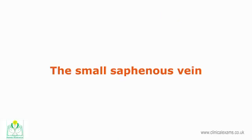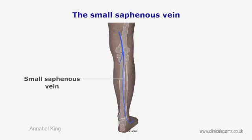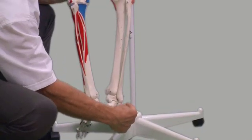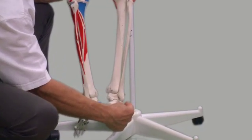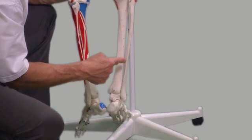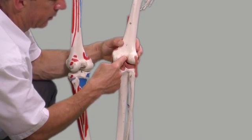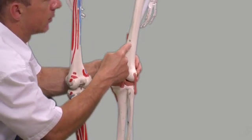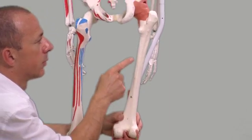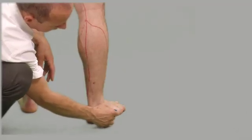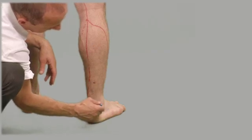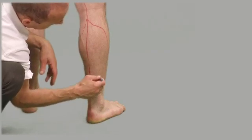The small saphenous vein is a relatively large superficial vein located in the posterior part of the leg. It starts from the lateral marginal vein of the dorsum of the foot, ascends posterior and lateral to the lateral malleolus, and slightly lateral to the calf muscles, then between the two heads of the gastrocnemius muscle. It then joins the popliteal vein behind the knee. The popliteal vein then becomes the femoral vein as it ascends deep within the posterior medial muscles of the thigh.